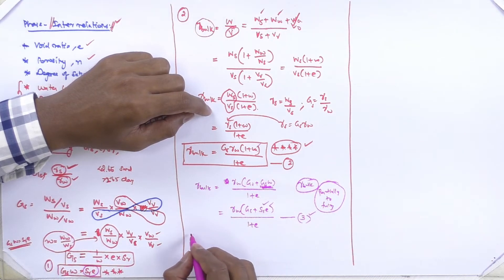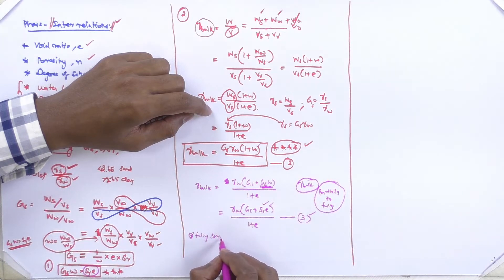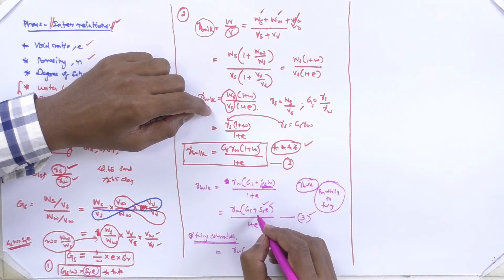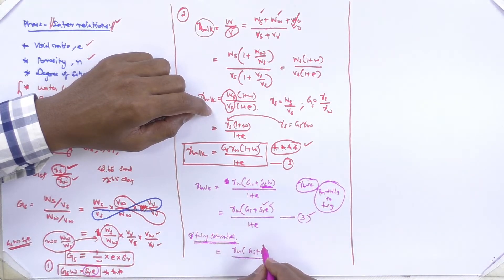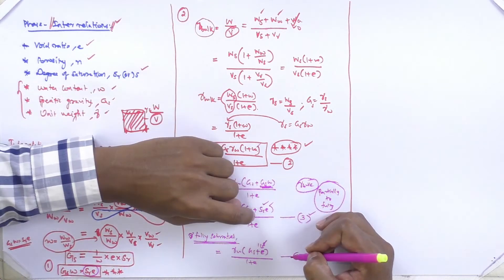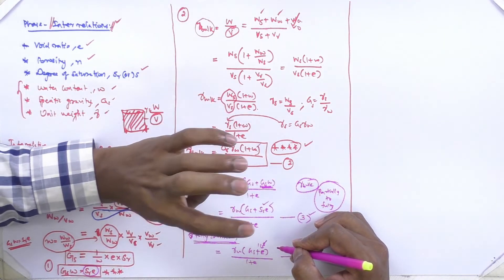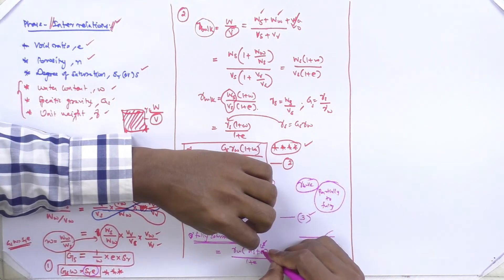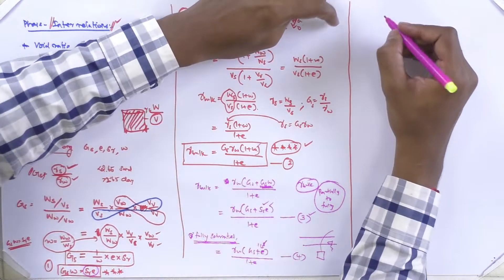If the sample is fully saturated — for example collected below the water table — then Sr = 1. Substituting into equation 3 gives equation 4: gamma_sat = γw·(Gs + e) / (1+e). If the sample is fully dry, Sr tends to 0, so equation 3 becomes equation 5: gamma_dry = Gs·γw / (1+e). This is another important formula.